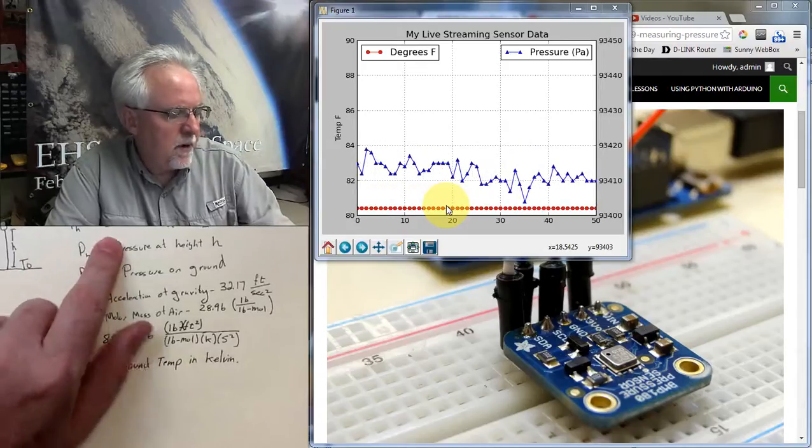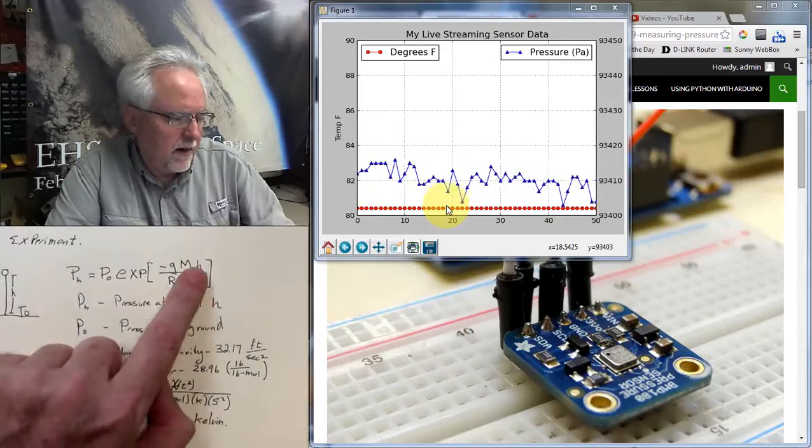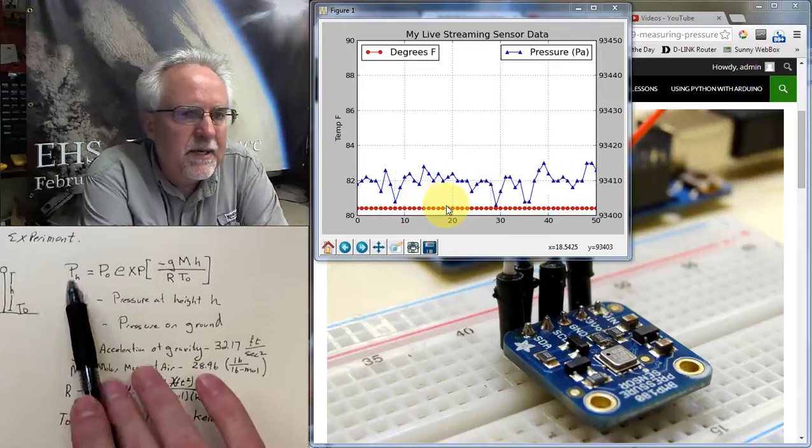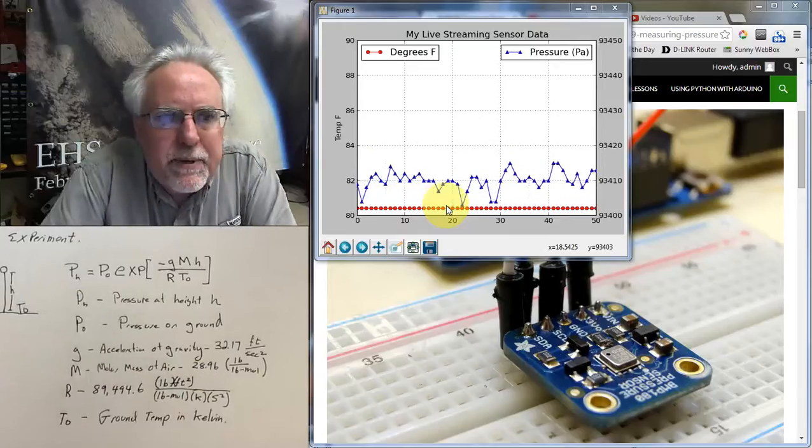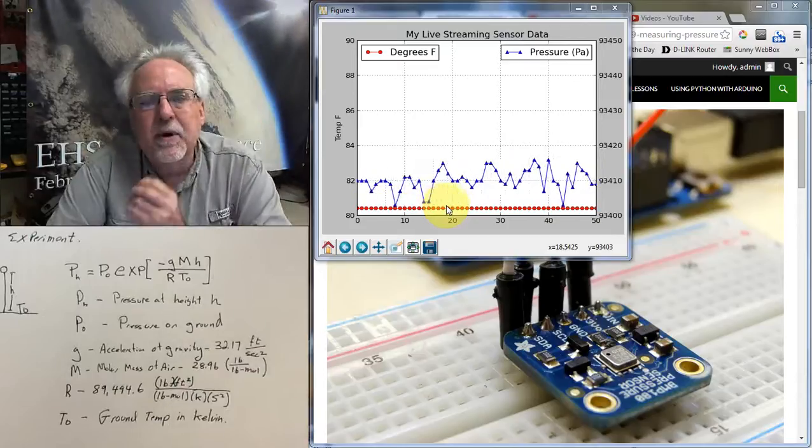based on P0 and a known H. The problem is, I don't want to calculate pH, I'm going to measure pH. So what is it I want to calculate? I want to calculate height, because I want to make a height-o-meter,